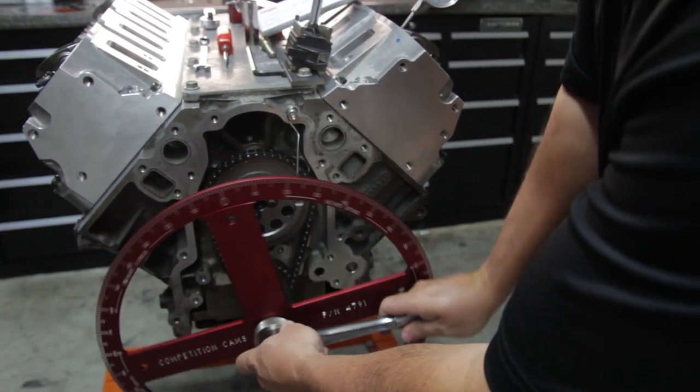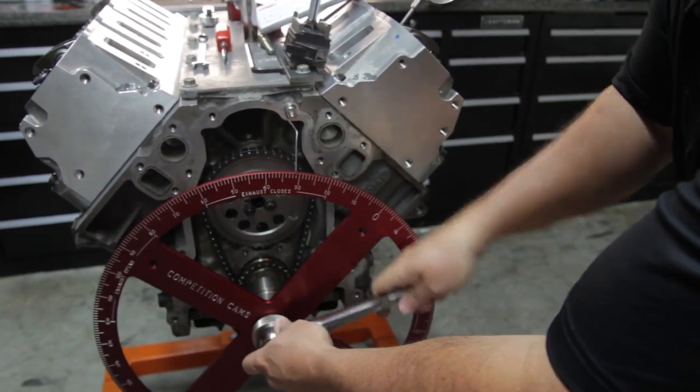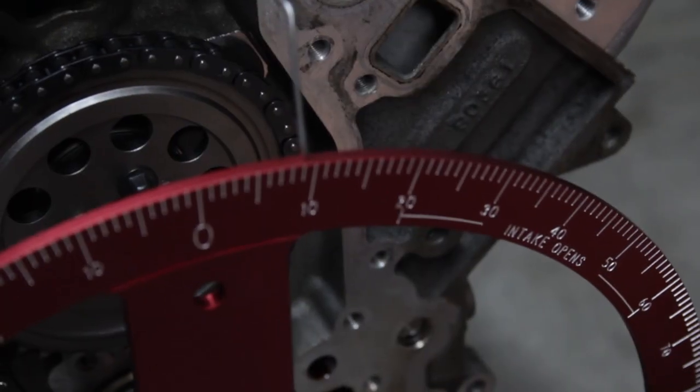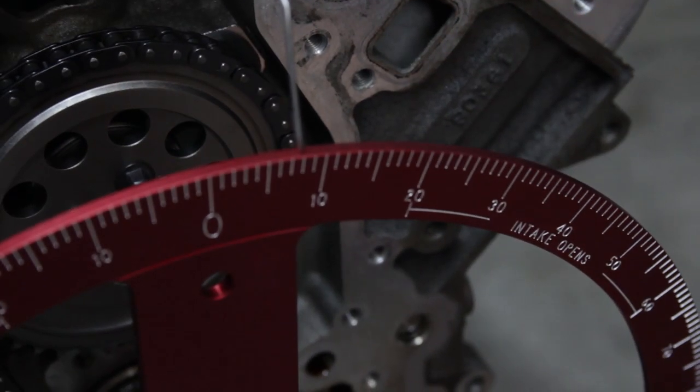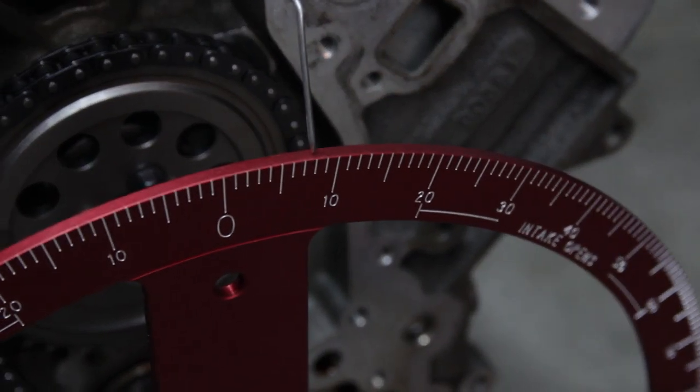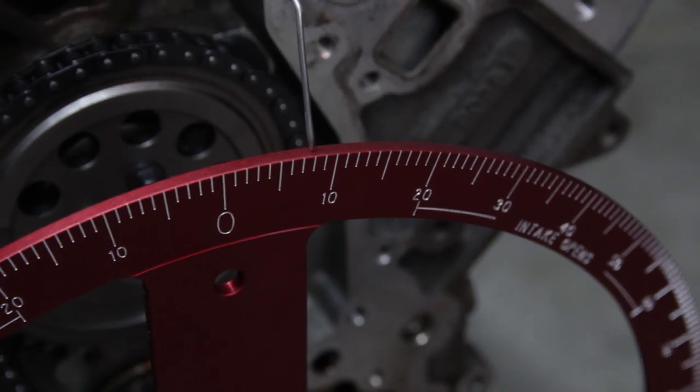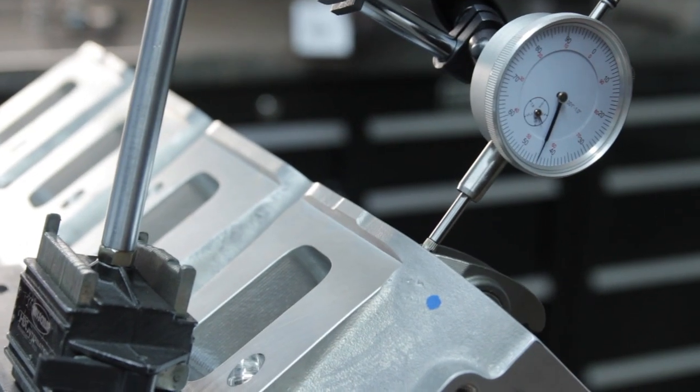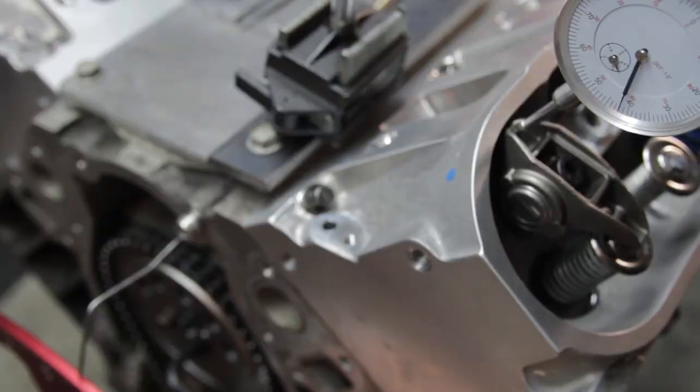So I'm going to rotate the crankshaft over. So you can see that we've got our degree wheel eight degrees before top dead center. According to our cam card, we should have 50 thousandths lift at the indicator. You can see it actually only shows about 45.